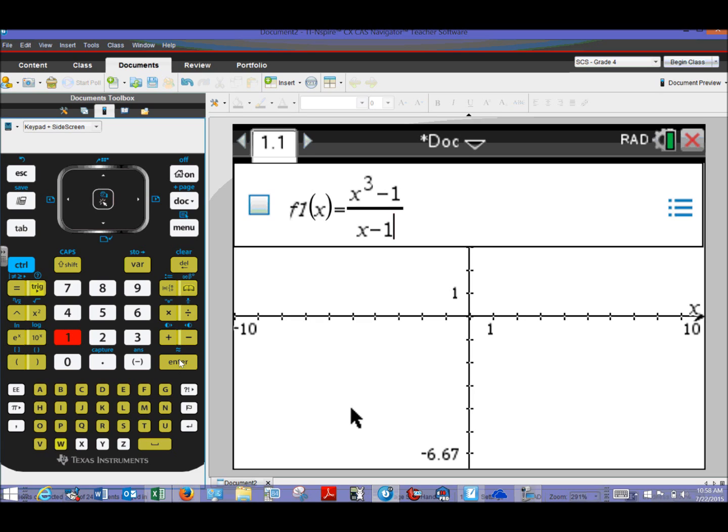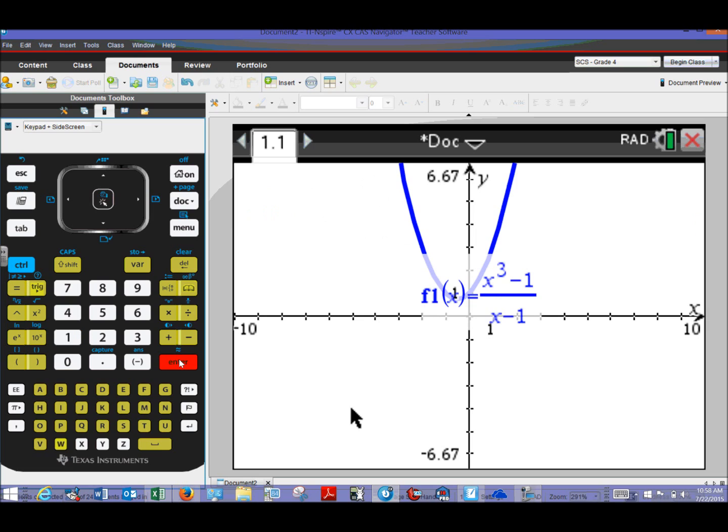So there's my numerator. And x minus 1 would be my denominator. Now we can just hit Enter. And if you don't like the location of the f1 of x label, you can easily move it. What you would have to do, it's hard to demonstrate this with the computer here,